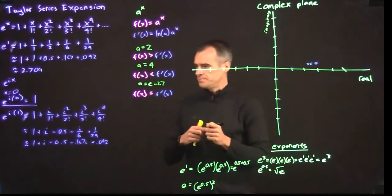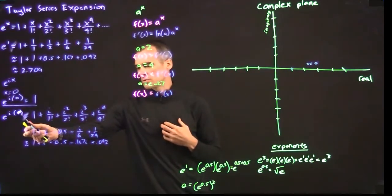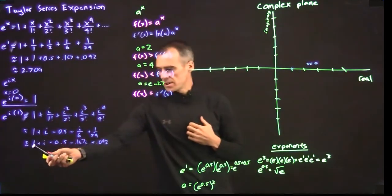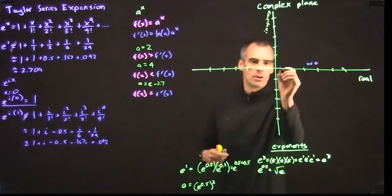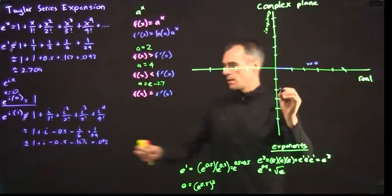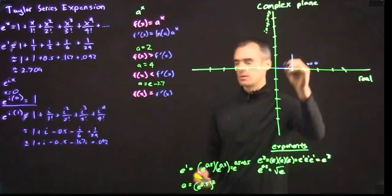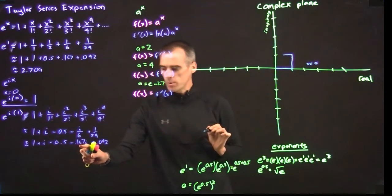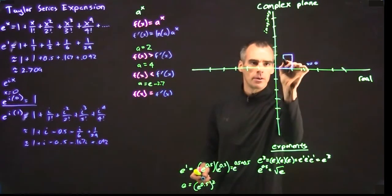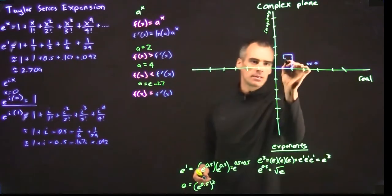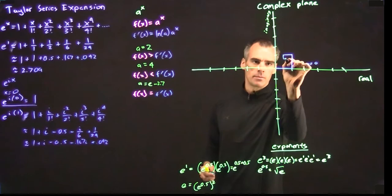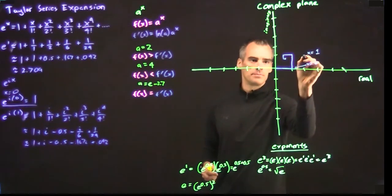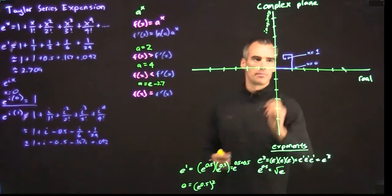Our next point was at x equals 1. To show this, let's go ahead and do each one of these steps here. First we're going to go over 1, plus 1 to it. Then we're going to plus i to it, so up 1 in the i direction. Then we're going to subtract 0.5 in the real number, so back this way 0.5. Then we're going to go down 0.167 in the i, just a little bit down. Then we're going to go over 0.042 just a little bit in that real direction. So here's our point. This is our x equals 0 here, and this is our x equals 1 point right here.